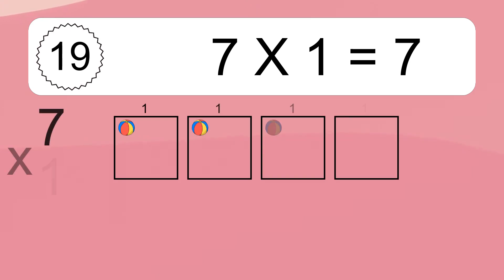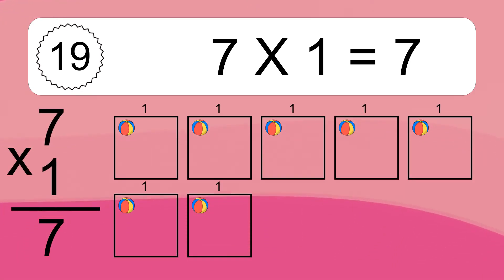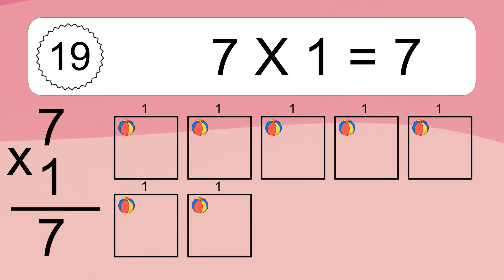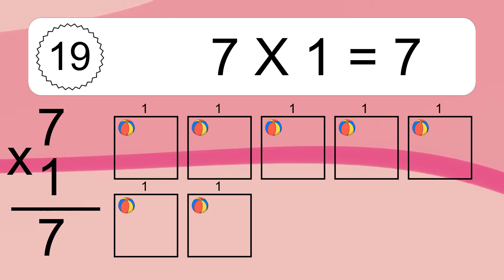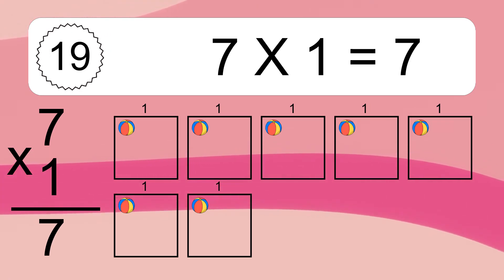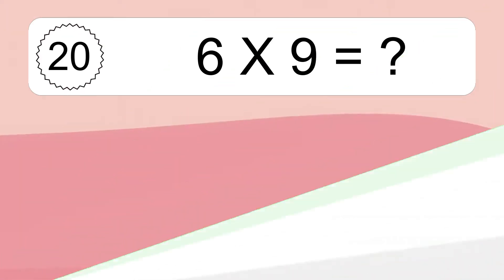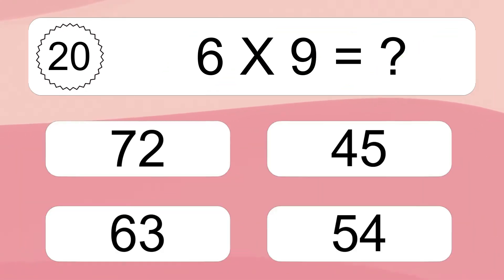7 times 1 equals what? 7 times 1 equals 7. We have 7 boxes, and each box has 1 colorful ball inside. If you count all the balls in all the boxes together, you will have 7 times 1 balls. This equals 7 balls.